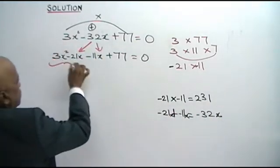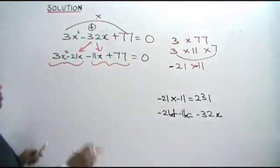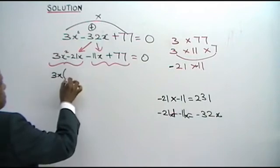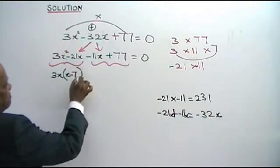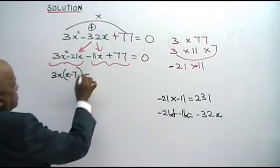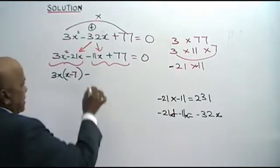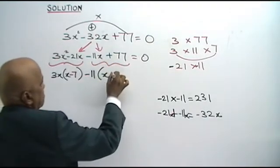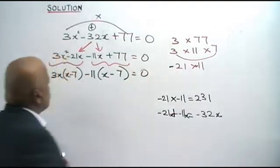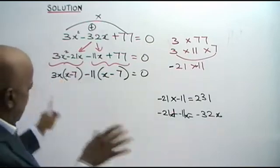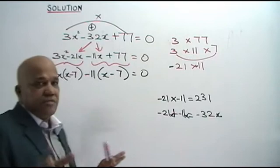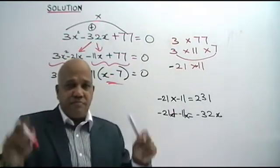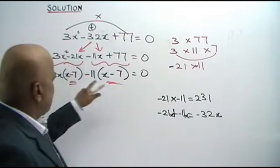You can solve it now — very simple. Take two terms at a time. Here, take out common factor 3x. What have you got? x minus 7. Minus — from the next pair, 11x and 77 — the common factor is 11. Bracket: x minus 7. Equals 0.